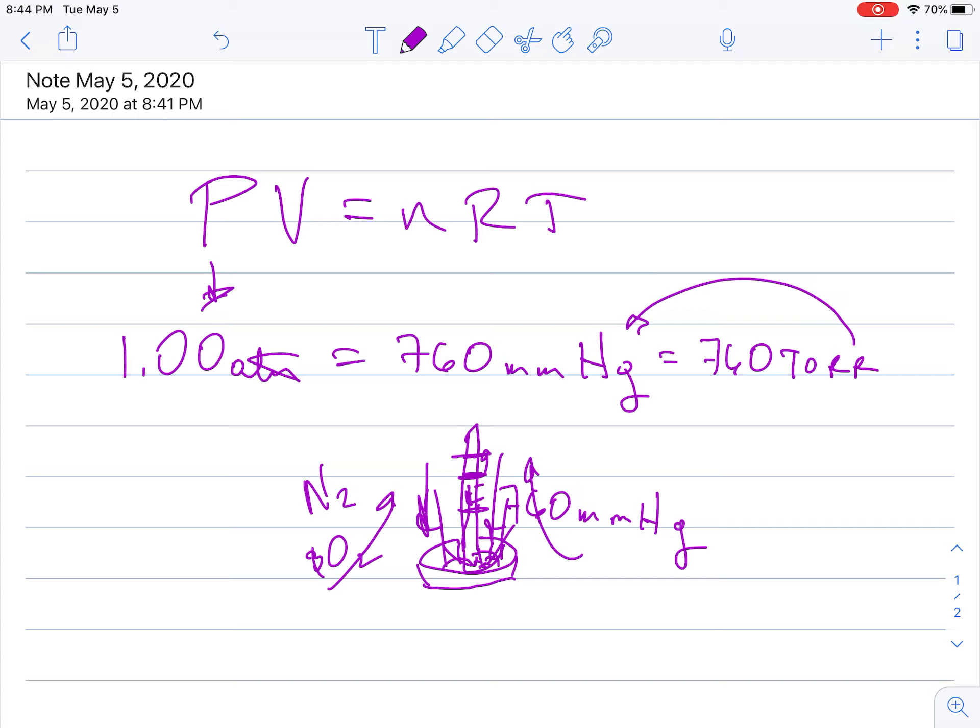That can also be listed as 760 torr. Millimeters of mercury and torr are the same thing. That's also equal to 101,300 pascals for those of you that remember your physics—101,300 newtons per square meter, otherwise known as pascals. In terms of your tire air pressure, that's 14.7 pounds per square inch. Typically, your tire pressure is usually about 35 psi.